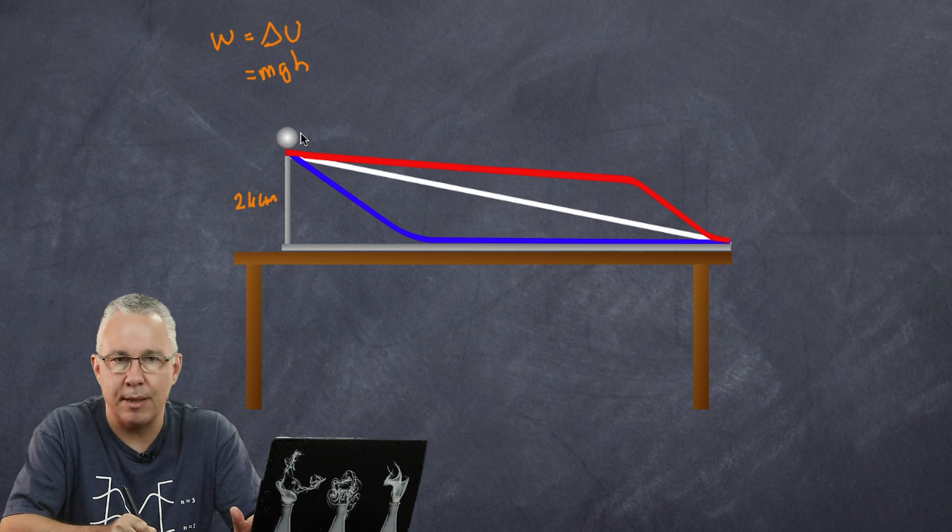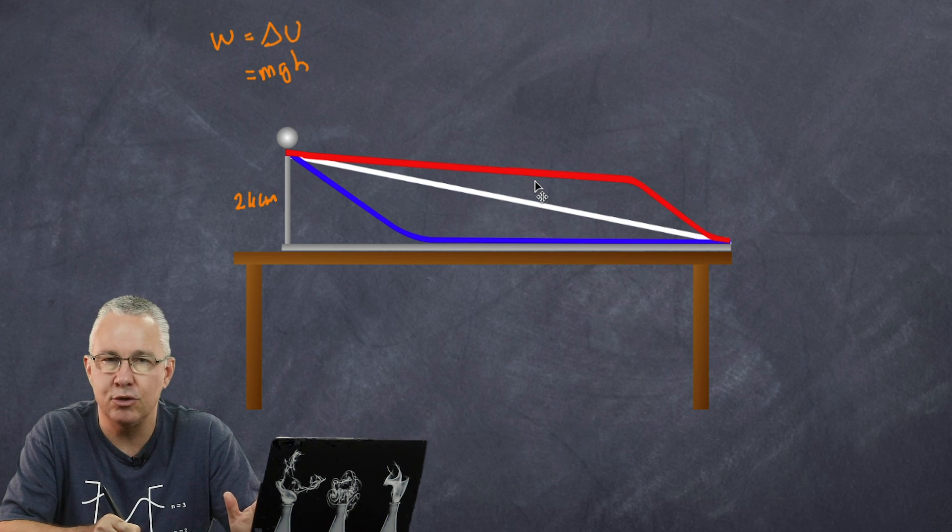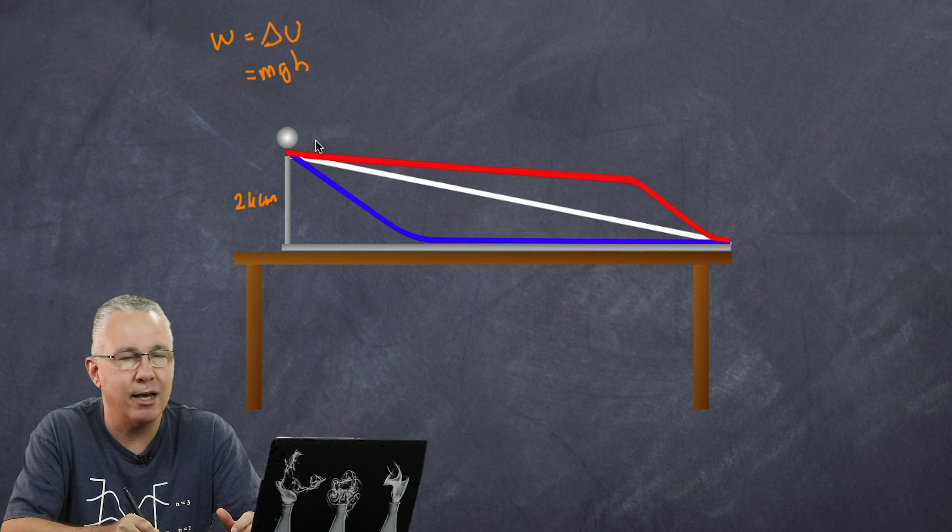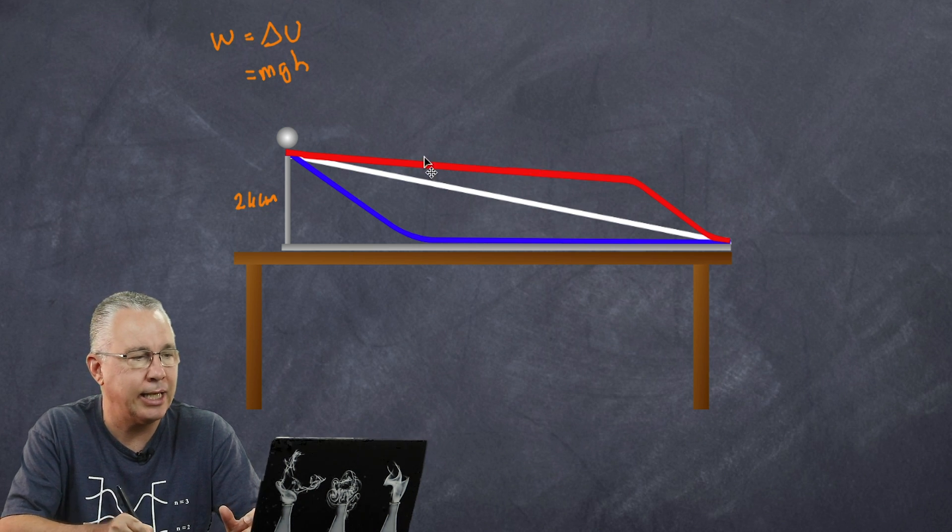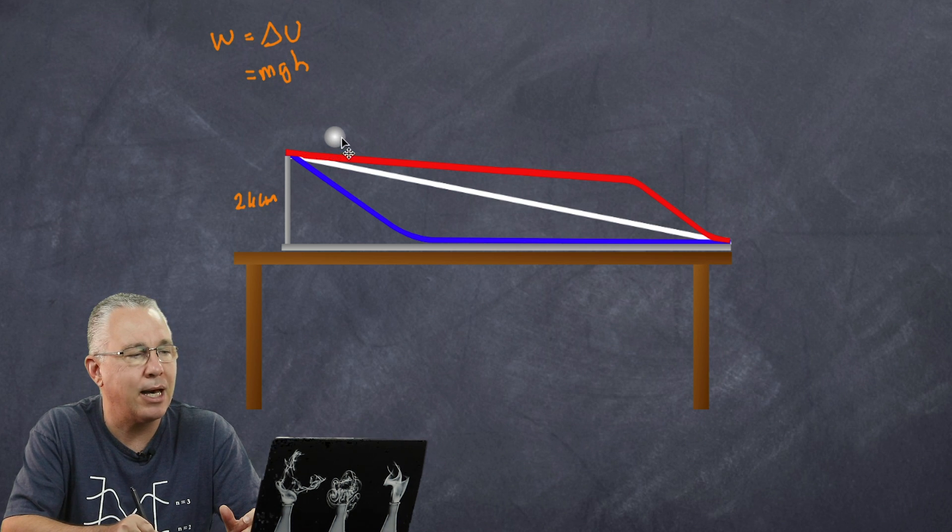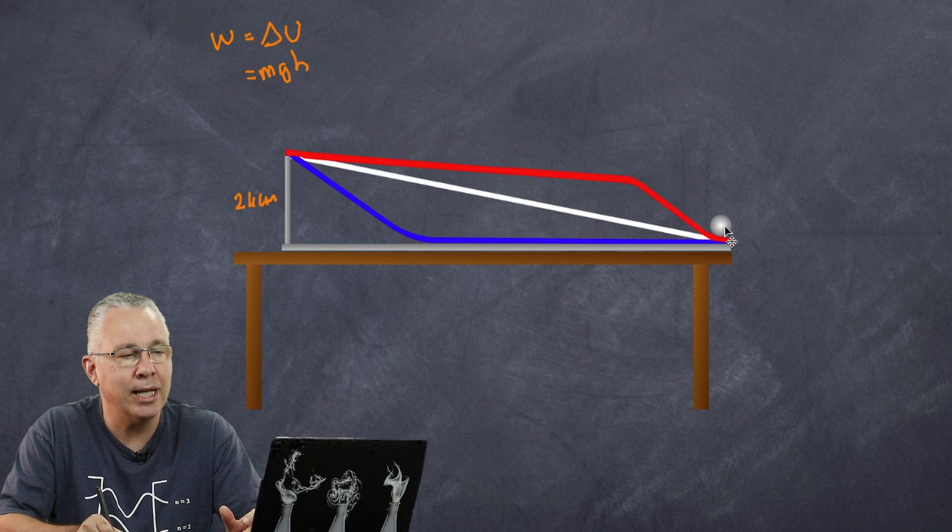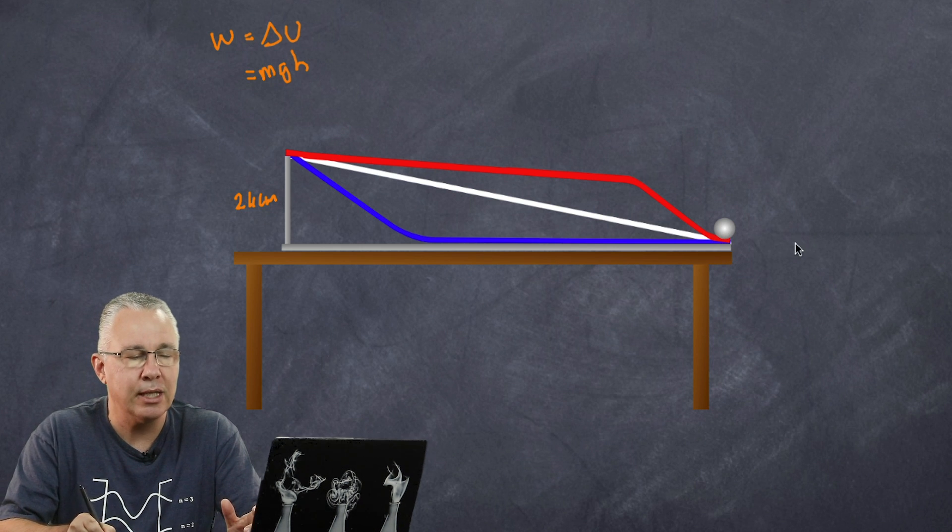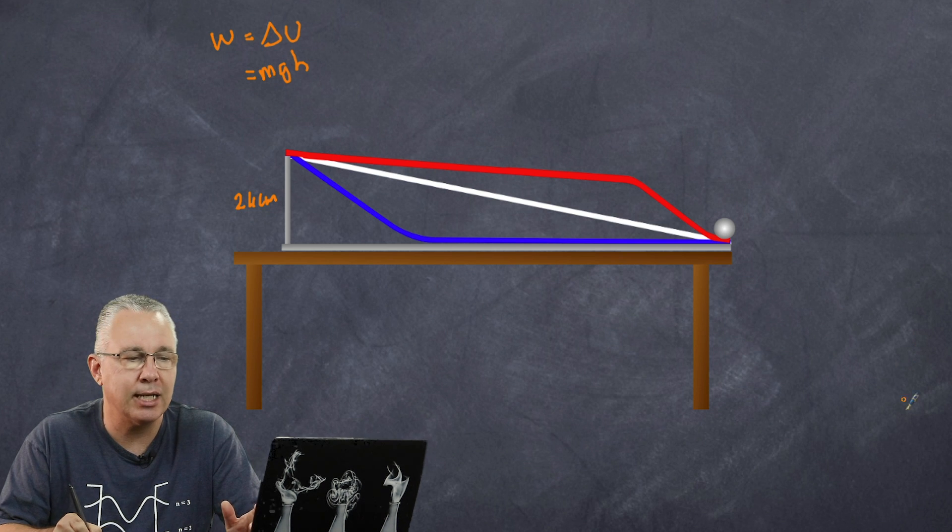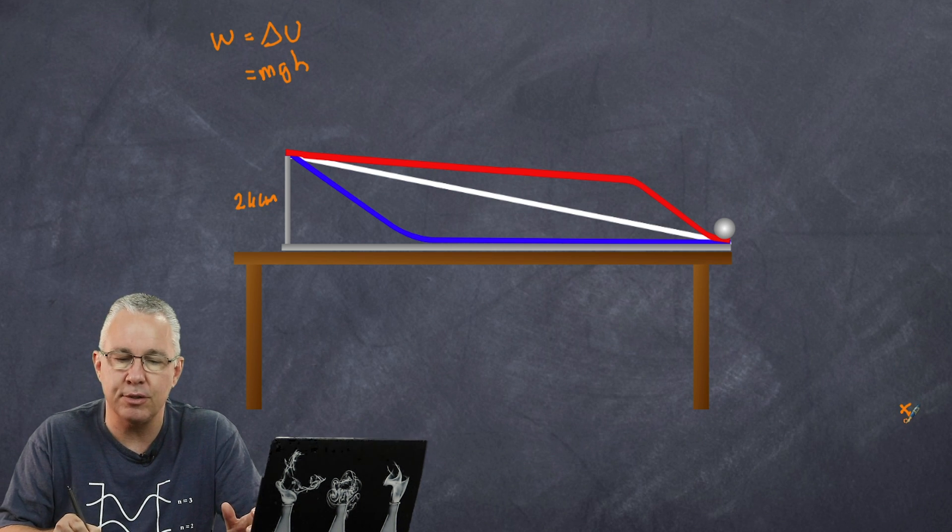Now the ball loses that potential energy. The gravitational field is doing the work now, and so what we have is a drop in potential energy, but the outcome is we end up getting a gain in kinetic energy. Now regardless of the path of the ball, they all end up leaving at the same velocity. How do I know that? Well I determined the velocity by using simple projectile motion analysis. They all landed at roughly the same position.